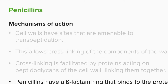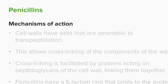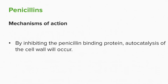Penicillins have a beta-lactam ring that binds to that protein, and for this reason the proteins are called penicillin-binding proteins. A penicillin-binding protein is where the penicillin is going to be active. If you inhibit the penicillin-binding protein, autocatalysis of the cell wall will occur and the cell wall will break down.